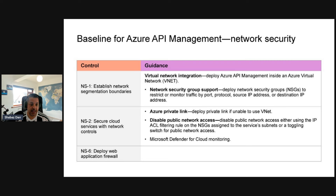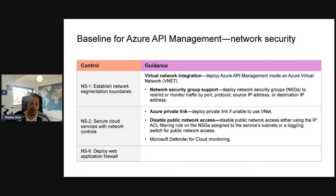First, network security baselines: NS1 is to establish network segmentation and boundaries, NS2 is to secure cloud services with network controls, and NS6 is to deploy the WAF — the Web Application Firewall. These increase the security posture within API Management and include deploying Azure Private Link, disabling public network access, and implementing Network Security Groups (NSGs).